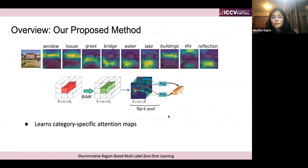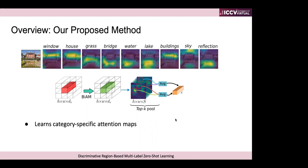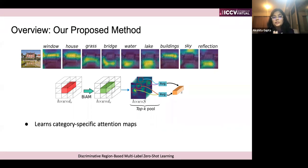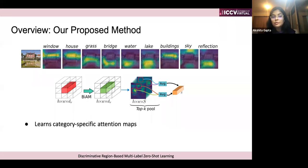Now I'll explain our proposed method. What we try to do is learn category-specific attention maps so we can get discrimination between dominant, abstract, and all possible types of objects. We mainly focus on learning region-specific features.